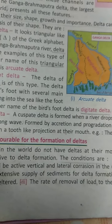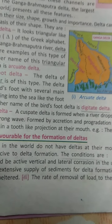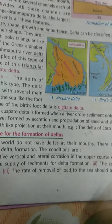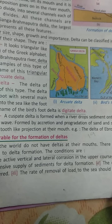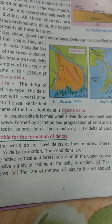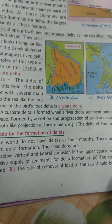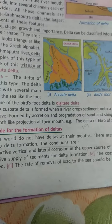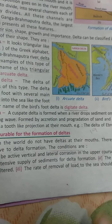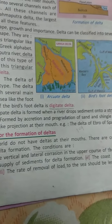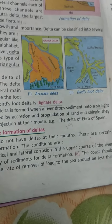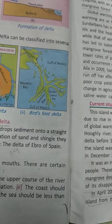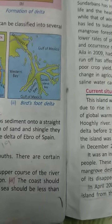For the formation of a delta, some favorable conditions should be present. The upper course of the river should have vertical and lateral erosion occurring there, so that it gets a supply of sediment. The coast should be tideless and sheltered. The rate of removal of the load to the sea should be less than the rate of deposition — that means the sediment should not be washed away, and it should be deposited at the mouth of the river.